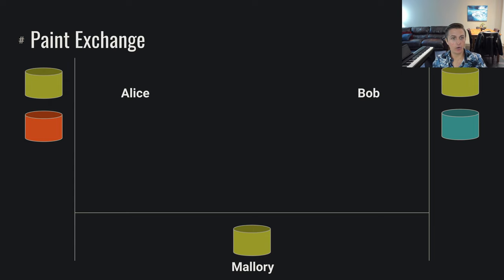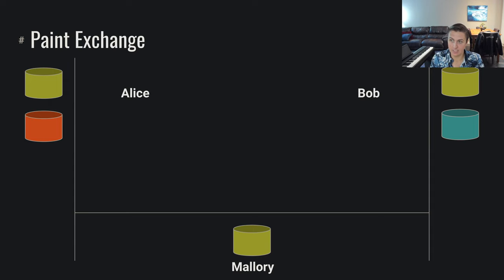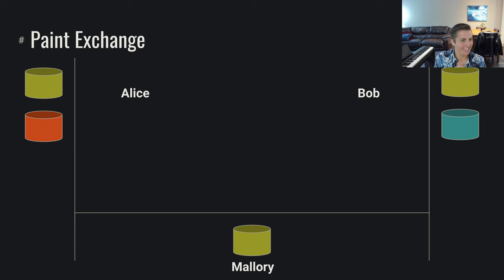Now Alice and Bob each securely generate colors of their own that they don't share with each other. Alice says she likes this orange color, and Bob says he likes this particular blue color. Mallory doesn't know either of these colors because Alice and Bob haven't communicated them. These are private bits of data — private paints that only Alice and Bob respectively know. Mallory does not know them.